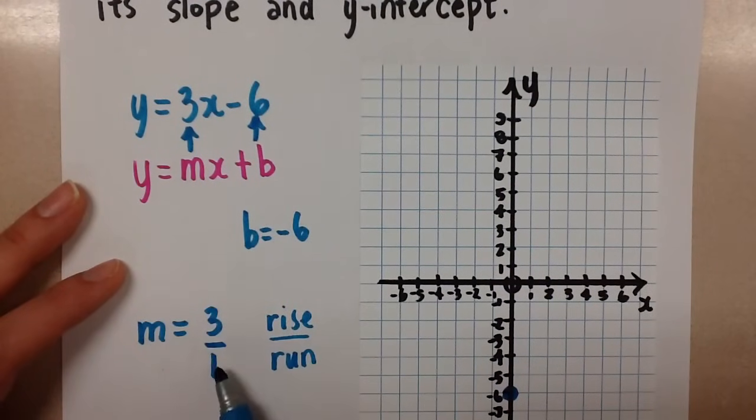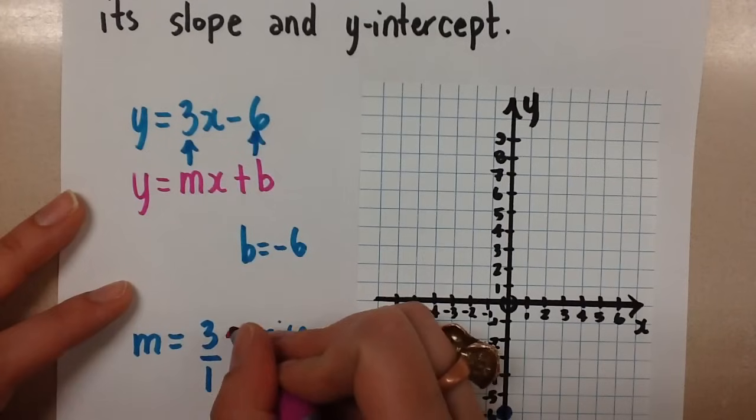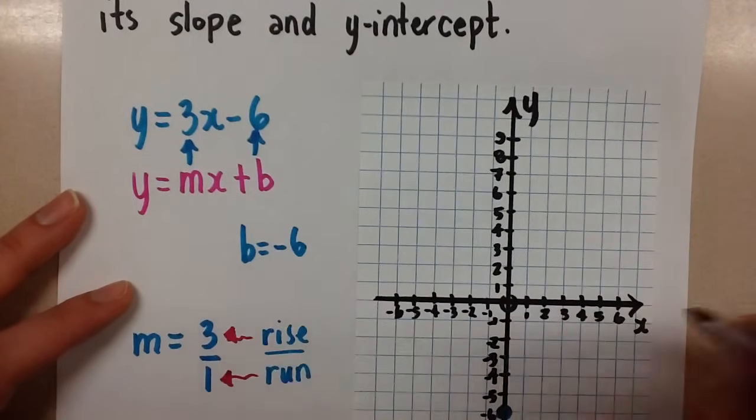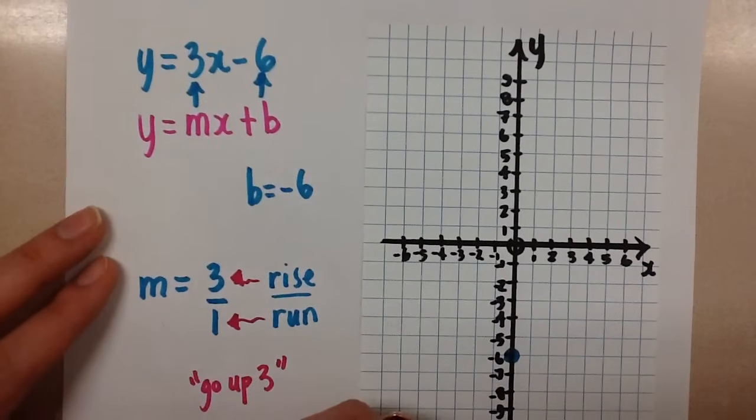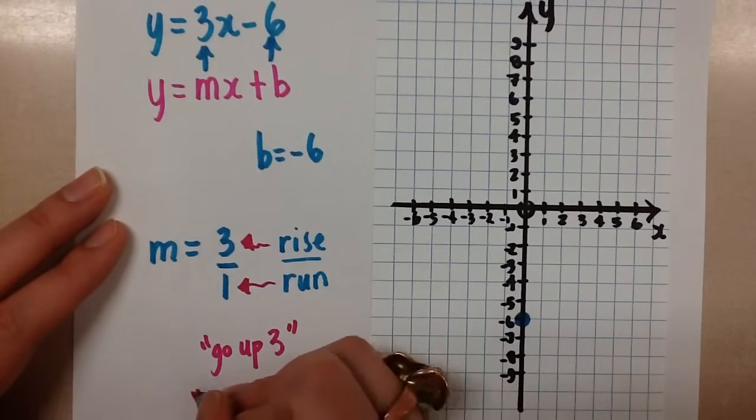But since we didn't have one, we're going to create that denominator. And now we see that the rise is positive 3 and the run is positive 1. This means go up 3 for the rise and go right 1 for the run.